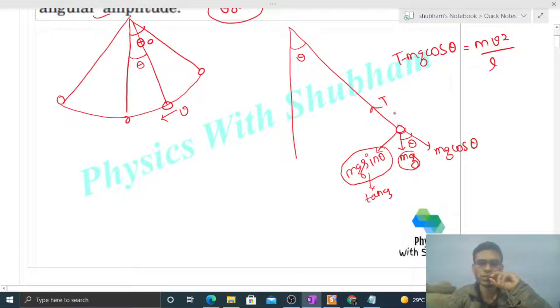The radius of the circle in which this pendulum moves, that radius will be nothing but the length of the pendulum. That's why the net force towards the center will be your centripetal force. So from here we can calculate the value of tension.